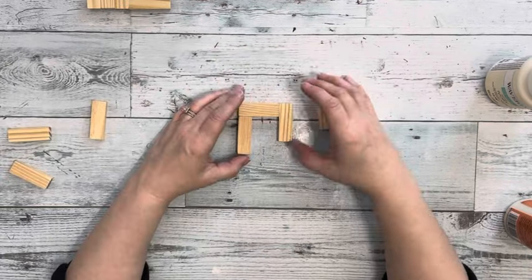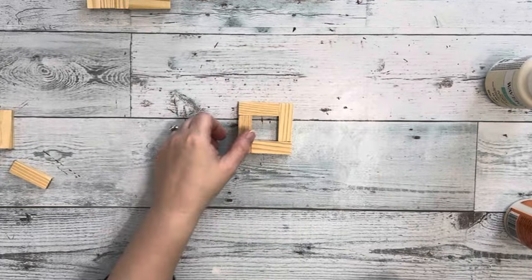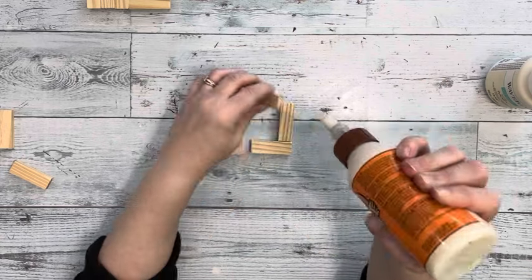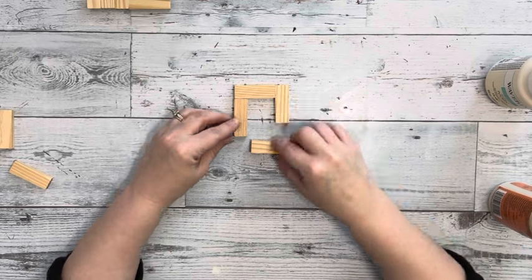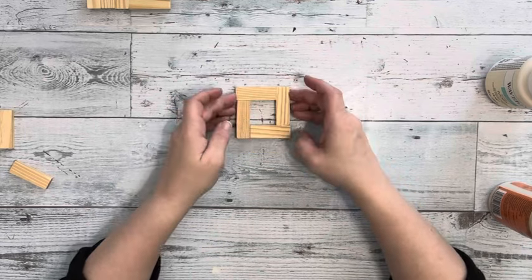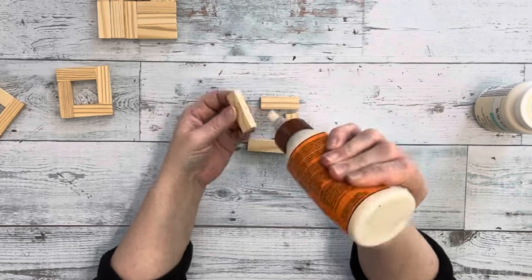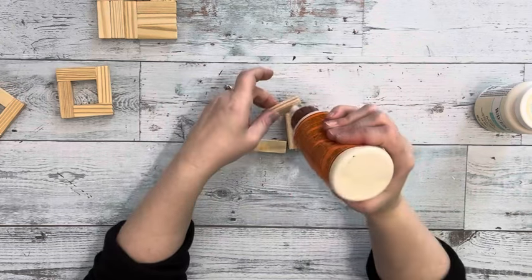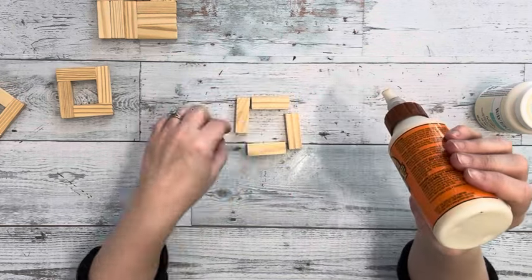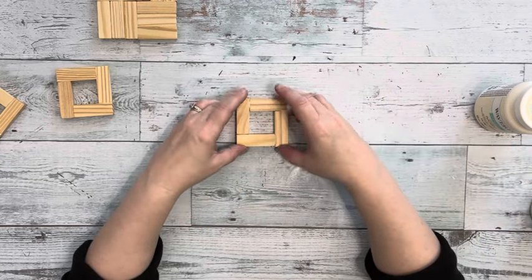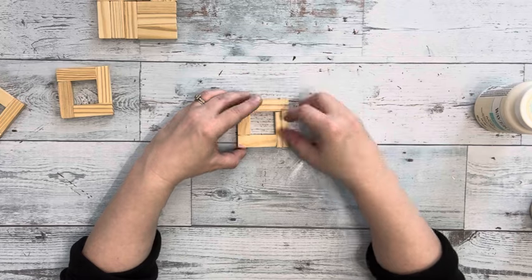Next I'm taking four tumbling tower blocks and gluing them into this little square shape, just gluing the ends of the tumbling blocks or the sides of them where they're going to be meeting. I make 19 of those and I let everything dry about an hour before I worked with them again. Altogether I used 88 tumbling blocks so you will need two boxes.